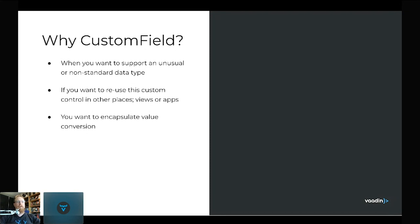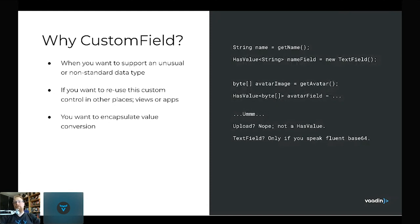Creating a custom field gives you great encapsulation. If you want to share your code with another project or view, you code the component once and you're good to go — no need to repeat value conversions all over your code base. For example, if you have a name field you'd use a text field with a string type. But what if you have an avatar image? That's a byte array — what field do you use? Upload doesn't really work, and text field doesn't either. There's no built-in field for byte arrays, so let's make one.